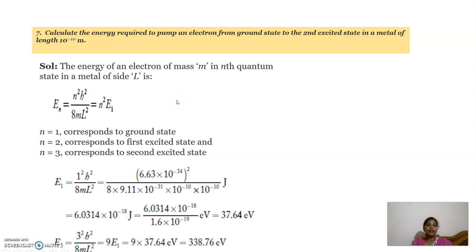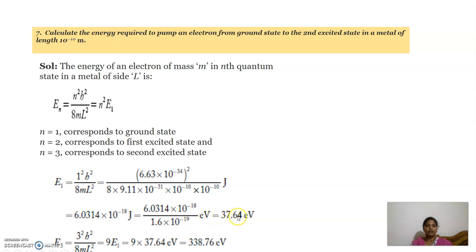The next problem: calculate the energy required to pump an electron from the ground state to the second excited state, with box length 10 power minus 10 meters. The energy is En equal to n square h square by 8mL square. n equal to 1 is the ground state, n equal to 2 is the first excited state, n equal to 3 is the second excited state. For the ground state, E1 is computed by substituting h, m, and L, giving 37.64 electron volts.